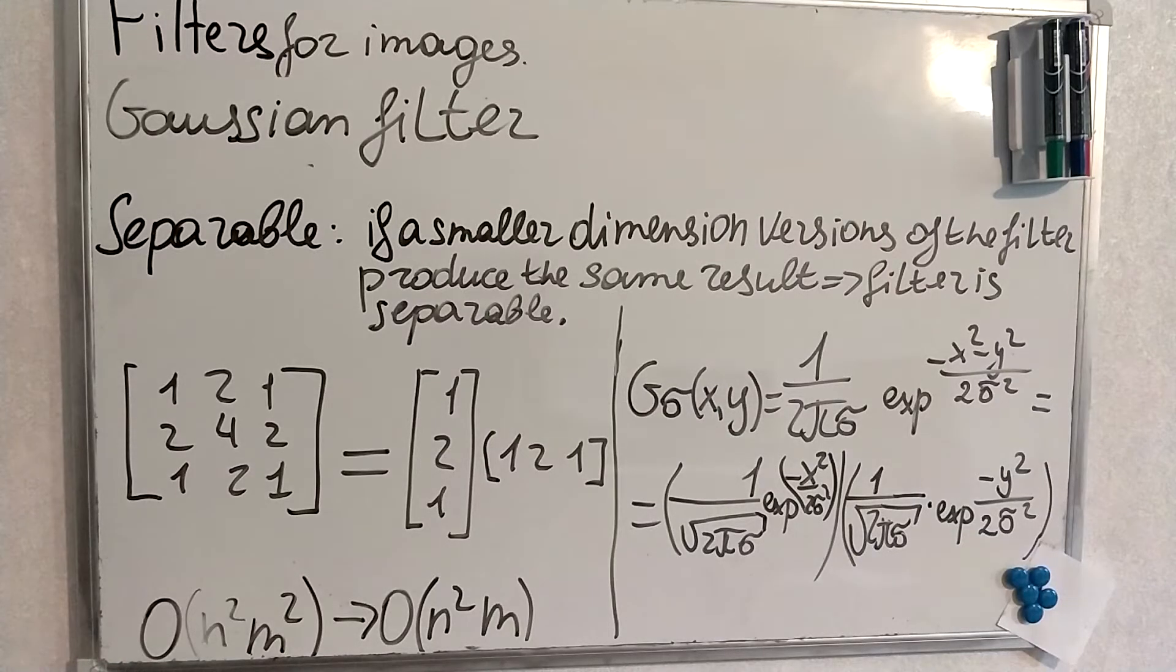So it will greatly reduce the computational burden. And on the right you can see the mathematical proof that it's actually possible. Two Gaussian kernels can be expressed as a product of X and Y. And they are convolved.